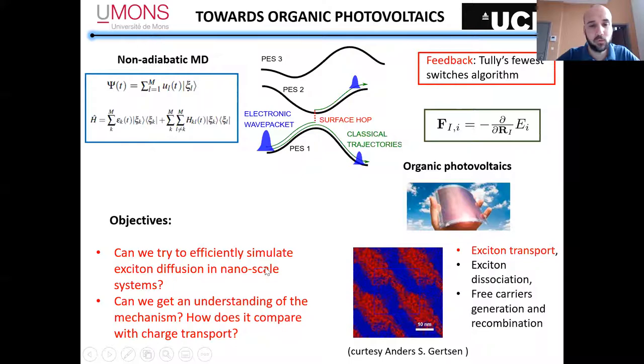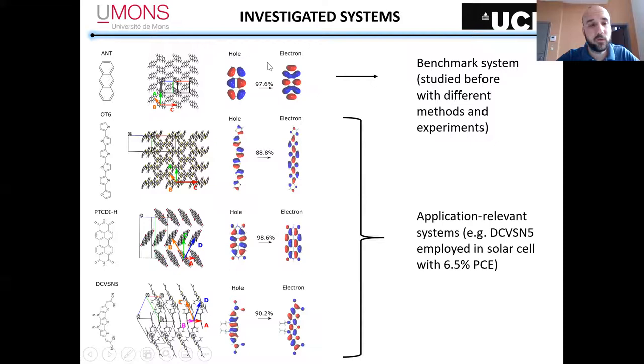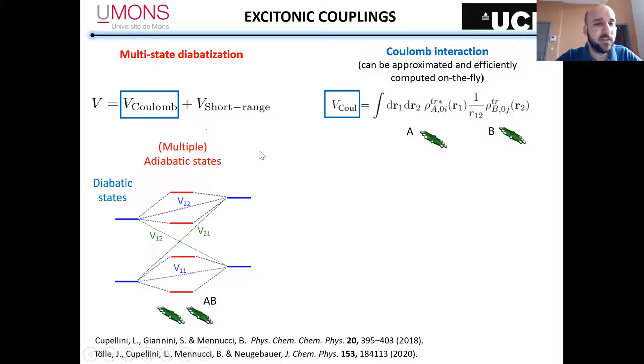The systems we've studied so far are still crystalline: anthracene, which is a useful benchmark, an oligothiophene prototype for P3HT, a PDI derivative, and an acceptor-donor-acceptor molecule which has shown high power conversion efficiency. The first thing you have to do is compute the excitonic couplings.